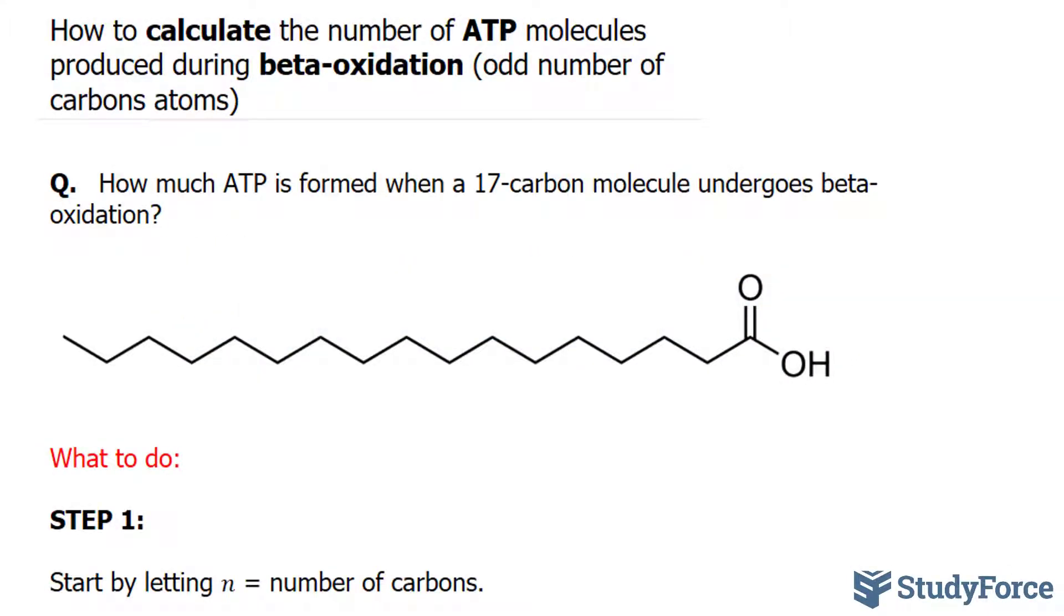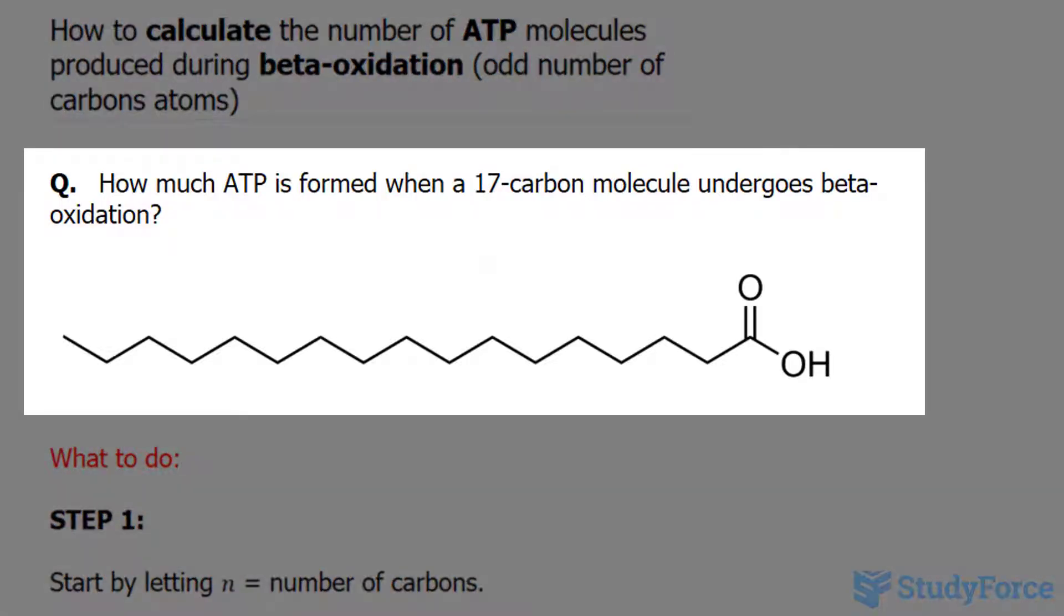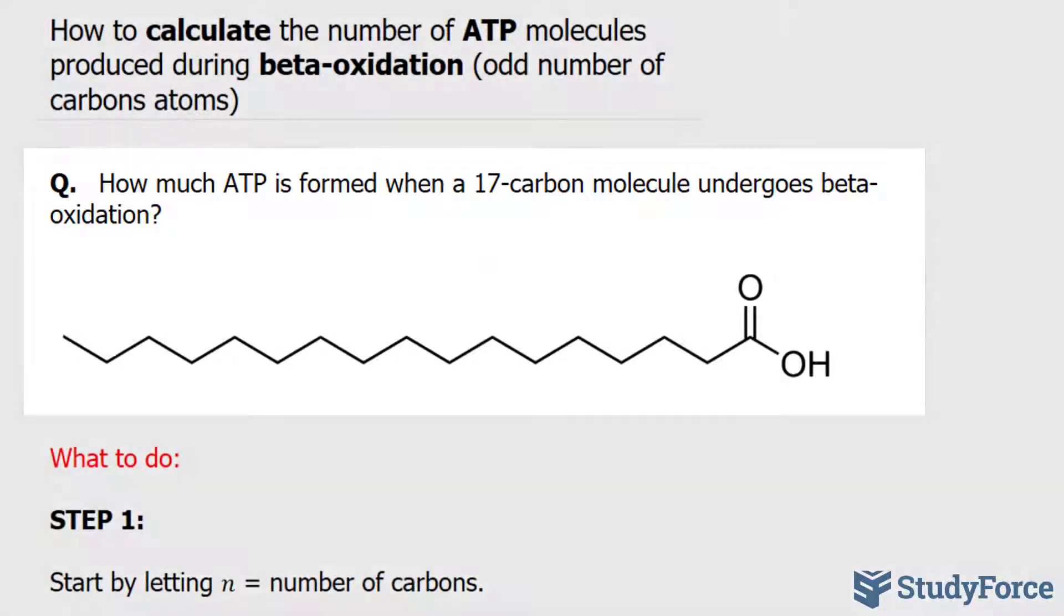In this lesson, I'll show you how to calculate the number of ATP molecules produced during beta-oxidation of odd number carbon atom fatty acids. The question reads: how much ATP is formed when a 17-carbon fatty acid molecule undergoes beta-oxidation?